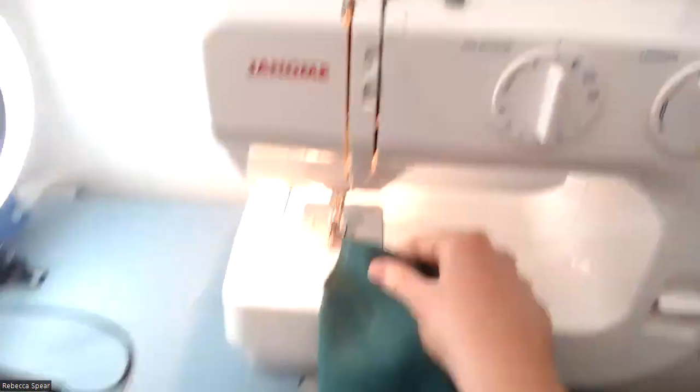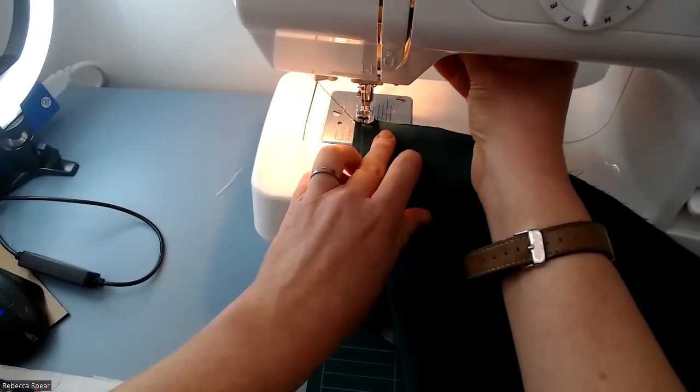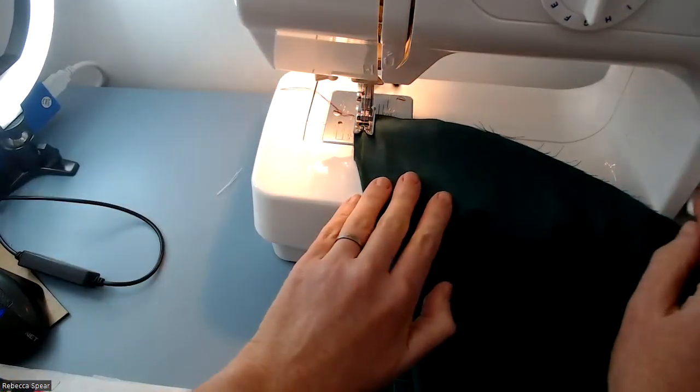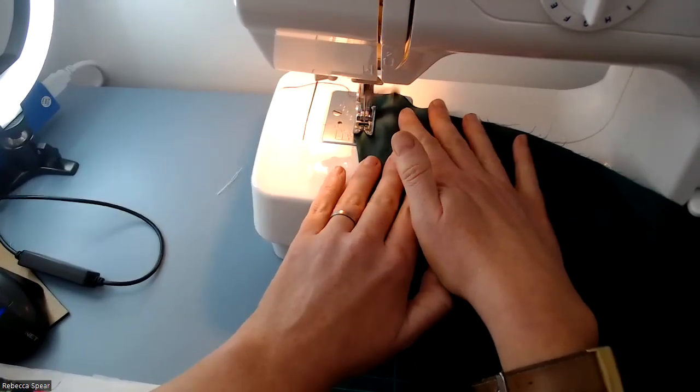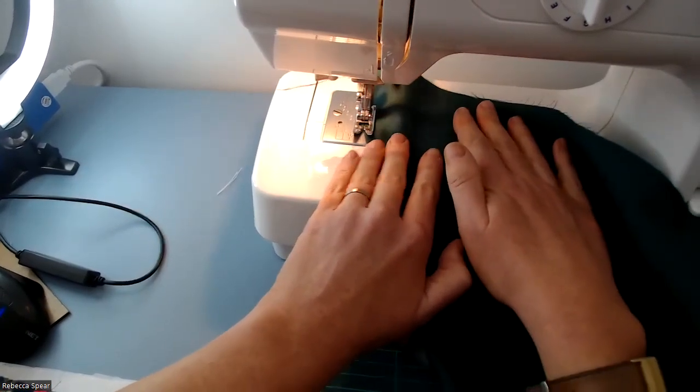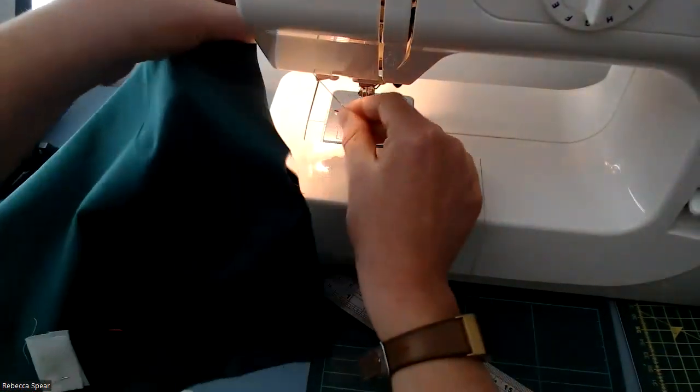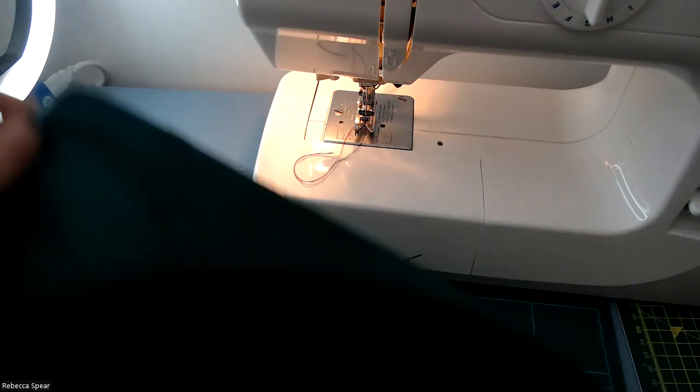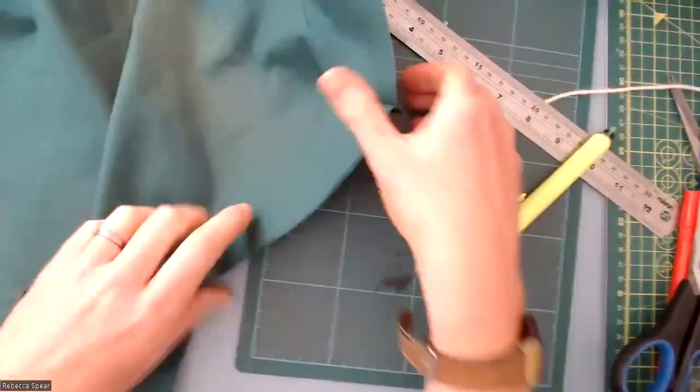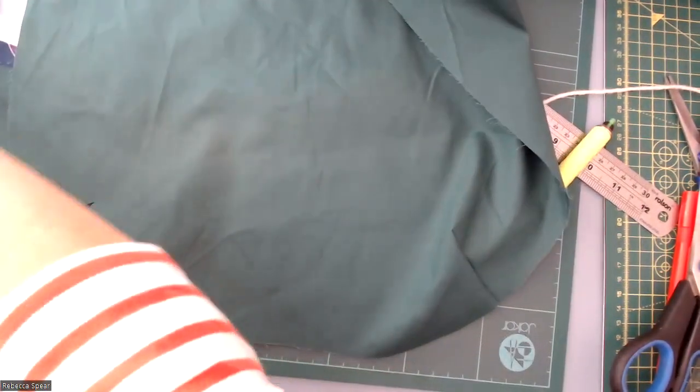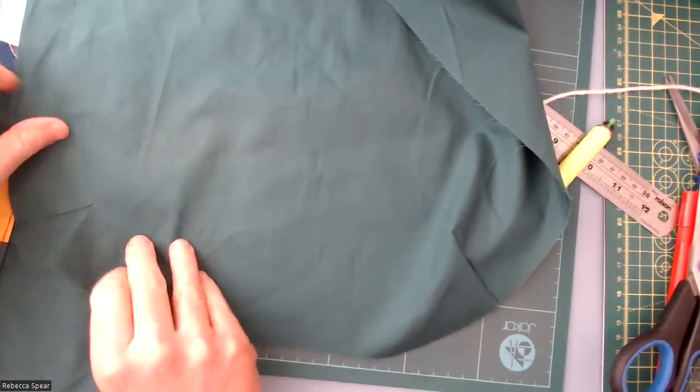We can sew those on all of the pieces, and then it just gives you a bag depth there. I'll repeat that for the other side here and then the other lining piece and the two outers, and then you can put that to the side and that will be all of your darts done.